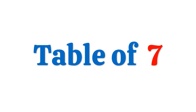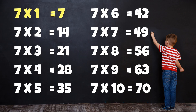Table of 7: 7 times 1 is 7, 7 times 2 is 14, 7 times 3 is 21, 7 times 4 is 28, 7 times 5 is 35, 7 times 6 is 42, 7 times 7 is 49, 7 times 8 is 56, 7 times 9 is 63, 7 times 10 is 70.